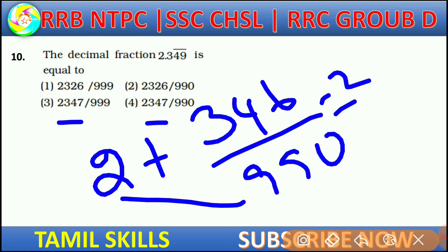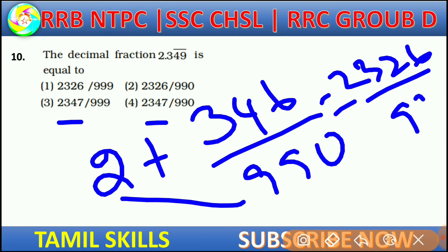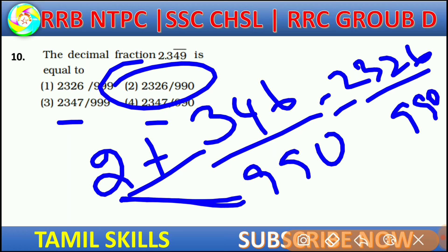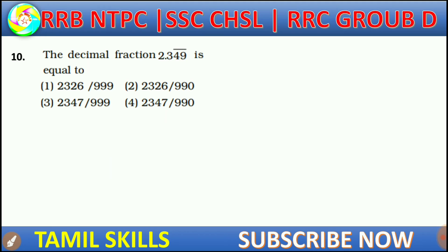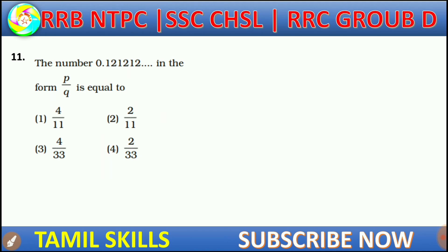After cancellation, the simplified answer is obtained. So this is the tool, friends — that's the answer. OK, let's get started. Now, this is a P by Q format. So 0.12 bar is a repeatable decimal.